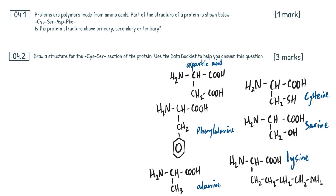Proteins are polymers made from amino acids, so amino acids are the monomers. Part of the structure of a protein is shown below — we have cysteine, serine, aspartic acid, and phenylalanine. You're always going to see these amino acids when they're linked in a chain like this as three-letter codes. Is the protein structure shown primary, secondary, or tertiary? Only one mark up for grabs. Really easy question — you just have to know the difference between primary, secondary, and tertiary proteins.